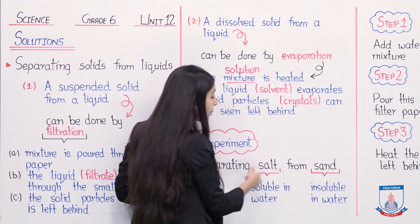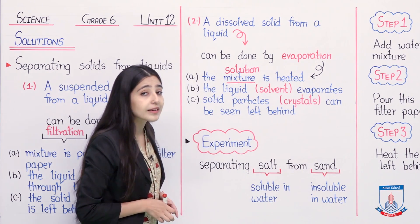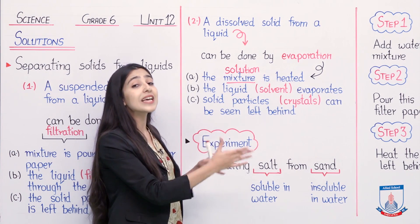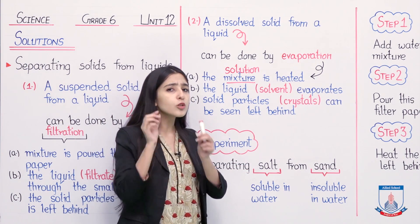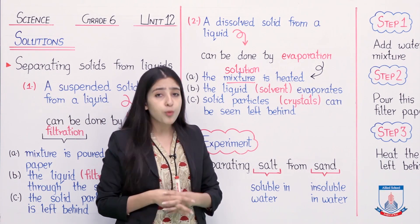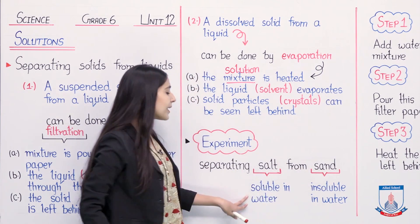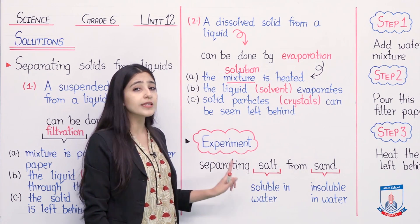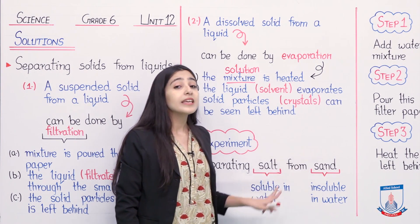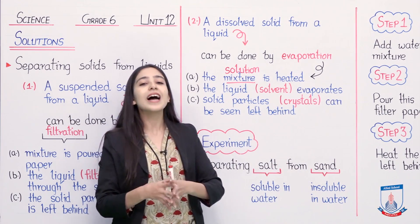Our experiment is: separating salt from sand. Salt is a solid state of matter and sand is also a solid state of matter. Here two solid particles are mixing together and we are calling it a mixture. We have to separate these two things from each other. Salt crystals and sand crystals both appear very small and look similar, making separation difficult. But we have a three-step experiment. Two key properties written below: salt is soluble in water; sand is insoluble in water. These two characteristics will help us separate both solid particles from each other.